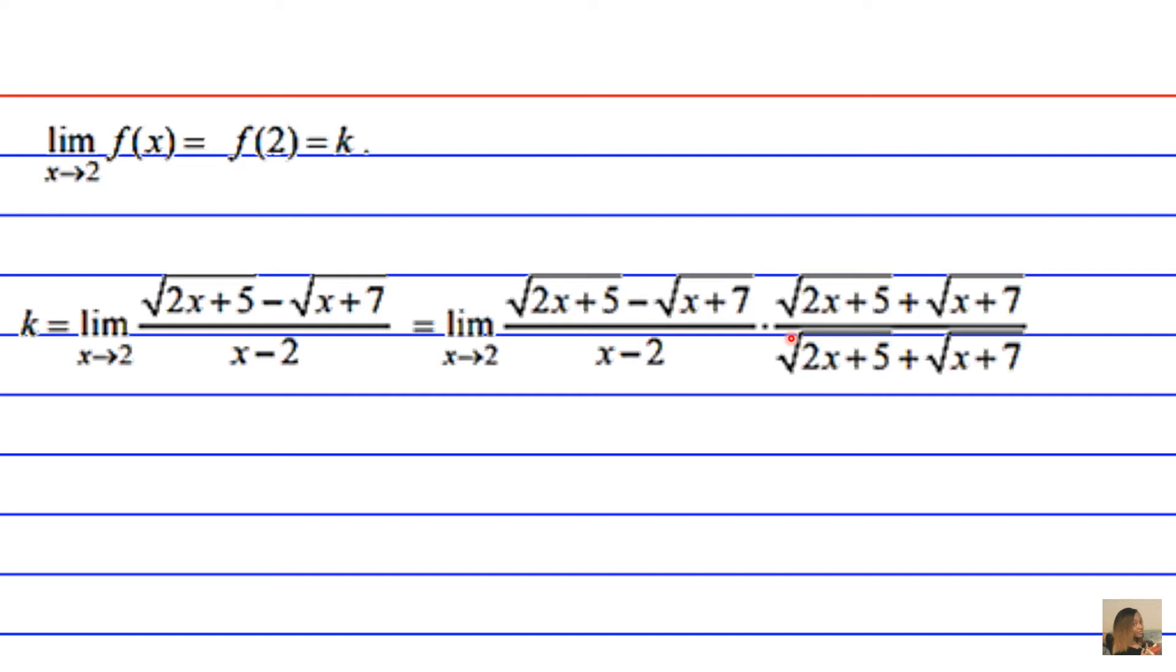In order to become comfortable with this technique, because you're probably going like, what's going on in your mind, you just need to do a lot more problems. So after multiplying out the numerators, you're going to eliminate the radical signs, and you foil the terms essentially, and you end up with 2x plus 5 minus x plus 7.